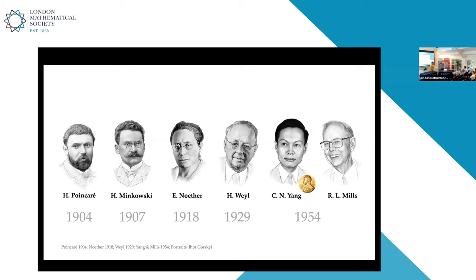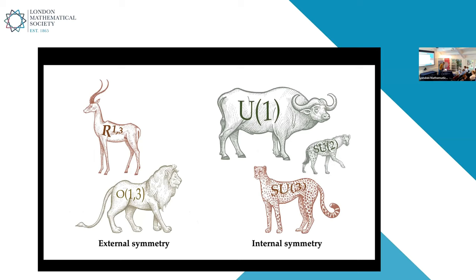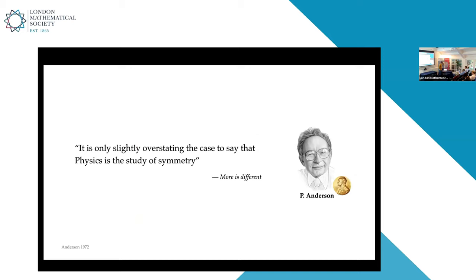Mostly in physics, more than 100 years ago, came the realization that you can actually derive physics from symmetry considerations. The famous theorem by Emmy Noether stated that in physical systems you can associate conservation laws with symmetry. This culminated in what we now call the standard model in particle physics — more or less all the physics we currently understand can be derived from these considerations. As Philip Anderson formulated it very laconically: it is only slightly overstating to say that physics is the study of symmetry.